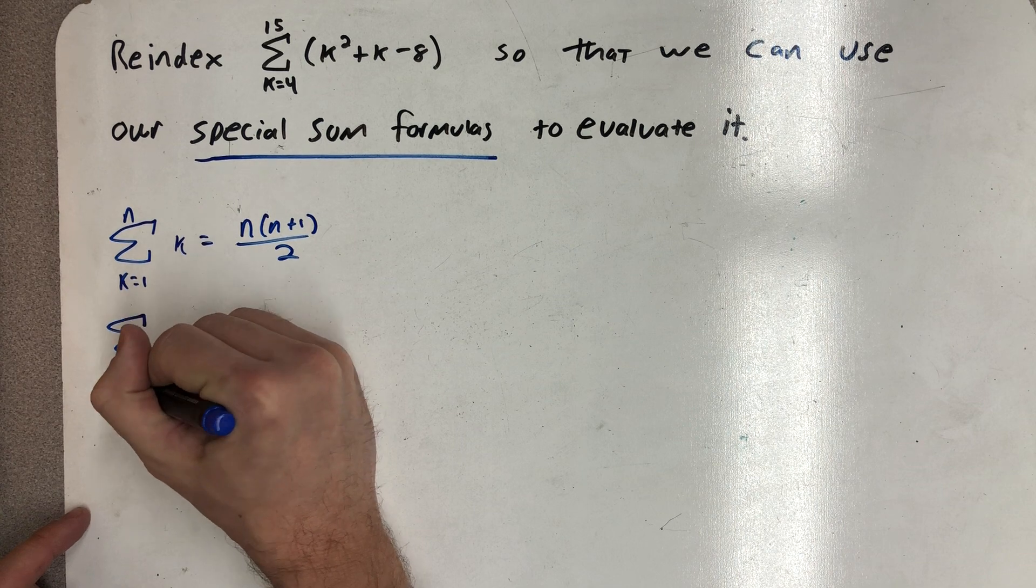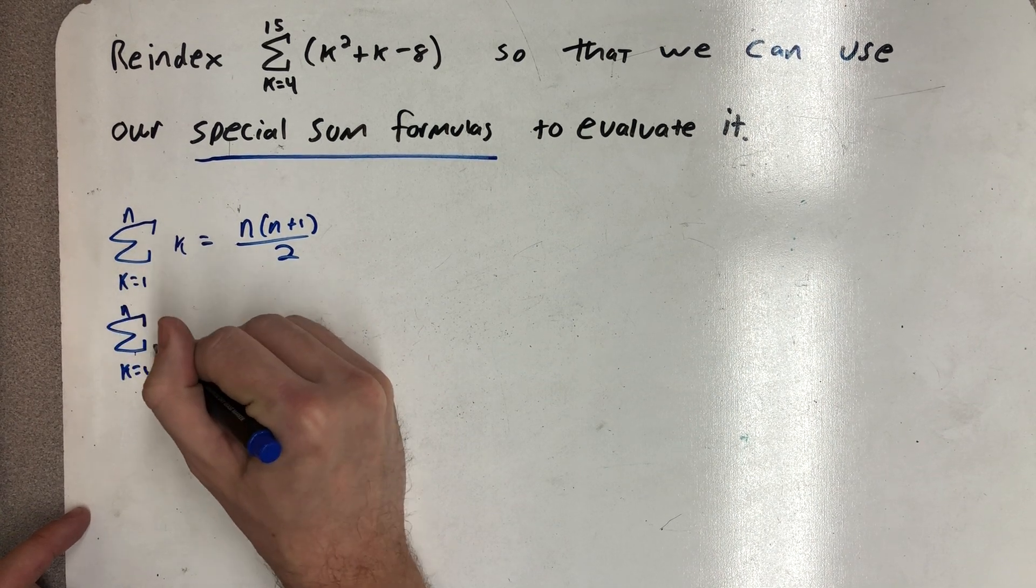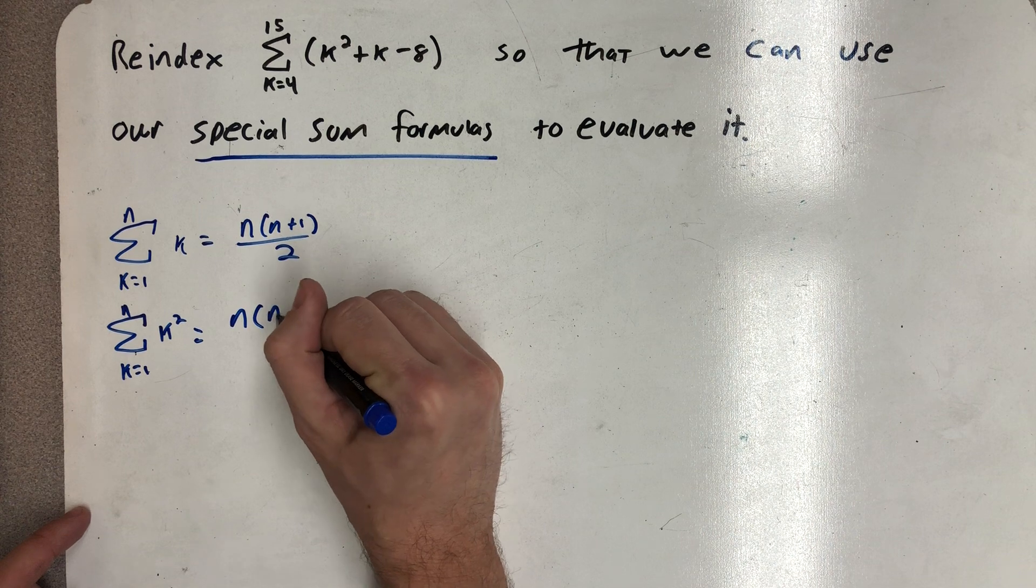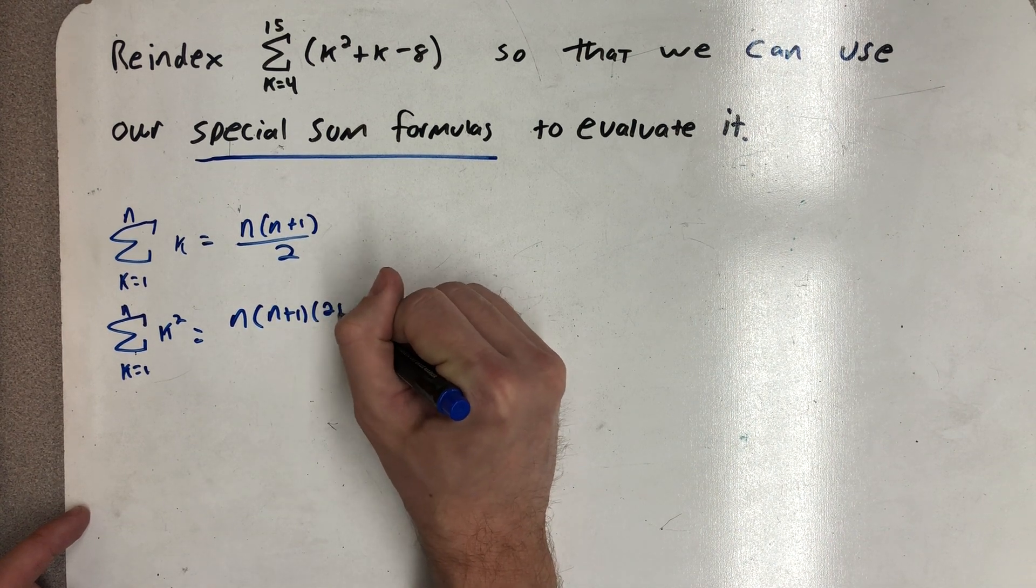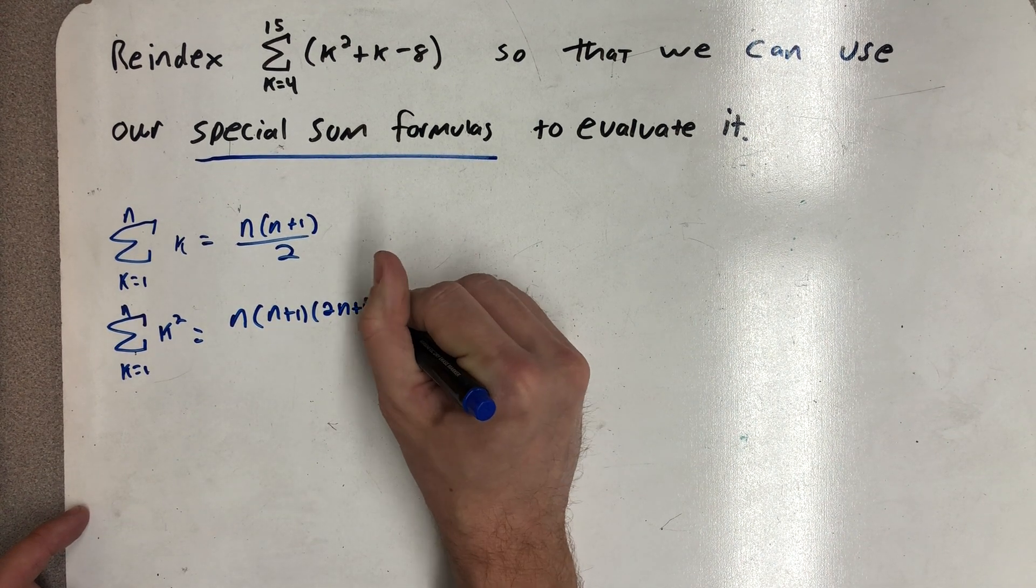The sum of the first n squares is n times n plus 1 times 2n plus 1 all over 6.